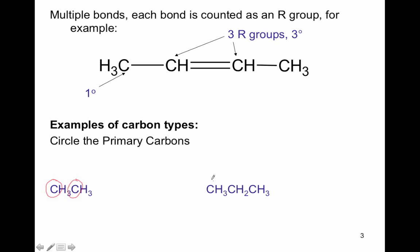Looking at this structure, we have a primary carbon here. This one's not primary — it has bonds to two carbons. This one only has bonds to one, so that's also a primary carbon. One way to look at the CH₃ group: I've expanded one CH₃ group to show that this carbon really only has one R group; the other groups are hydrogen.